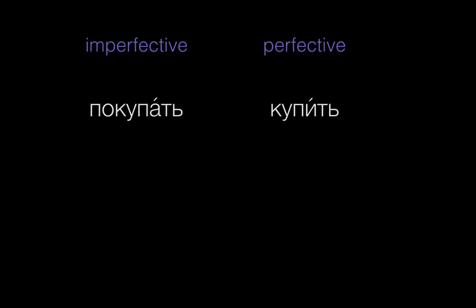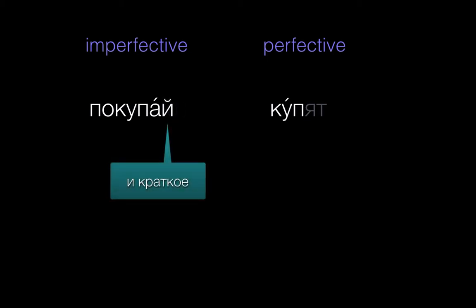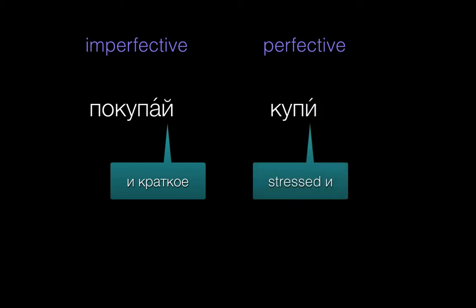As we saw in the last video, we use the same approach no matter what aspect a verb is. Notice how even though покупать and купить are an aspectual pair, the imperative forms do look a little bit different. The stem of покупать ends in a vowel letter, so we add и краткое: покупай. But the stem of купить ends in a consonant, and since there's end stress in the Я form — куплю — we add И: купи.